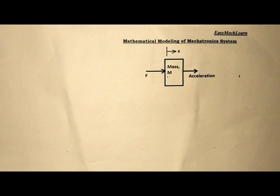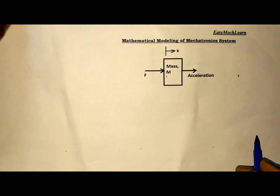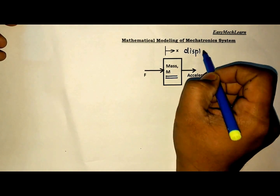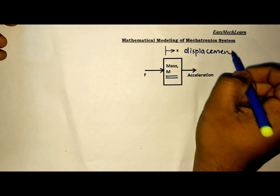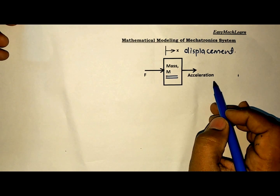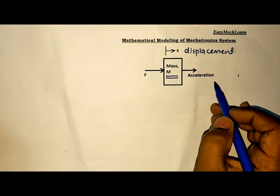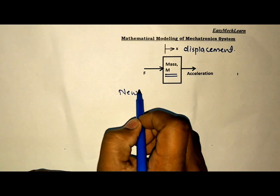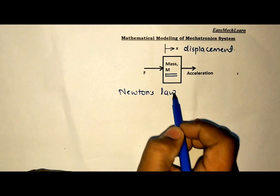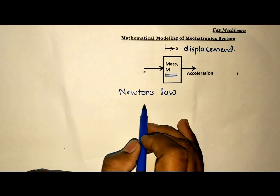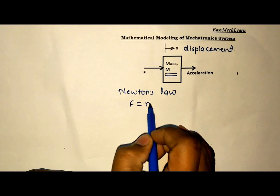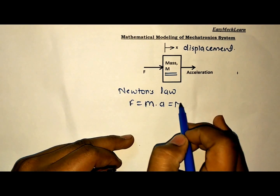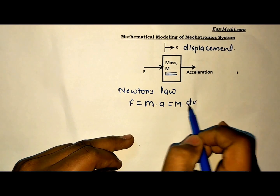Now let us find the transfer function for mass M. X is the displacement, and the mass has acceleration in the direction of the applied force. Applying Newton's second law of motion: F = mass times acceleration. Acceleration means dv/dt. Since V = dx/dt, substituting gives F = M·(d²x/dt²).